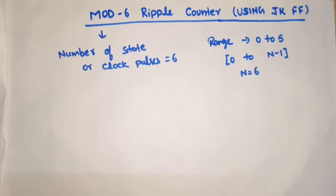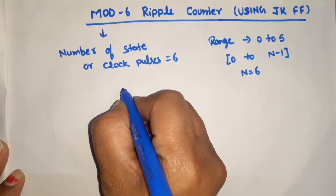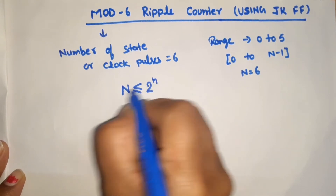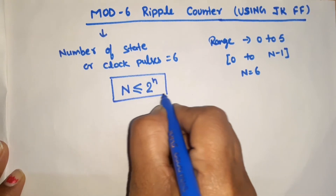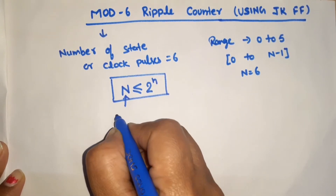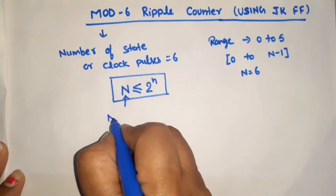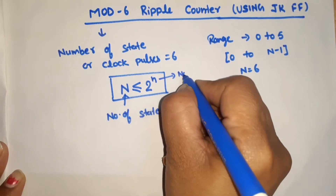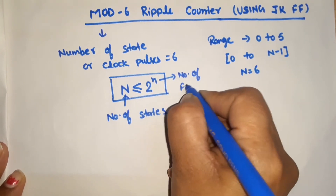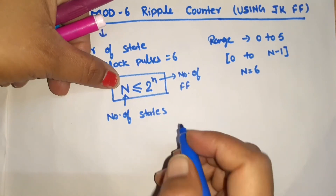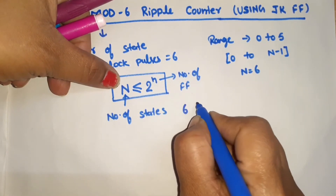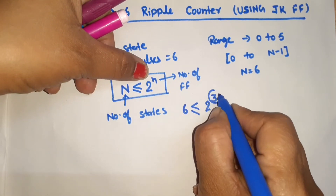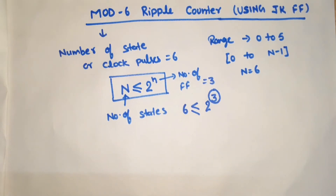Now we need to find out how many flip-flops are required. The condition that must be satisfied is: capital N should be less than or equal to 2 raised to the power n, where N is the modulus (number of states) and small n is the number of flip-flops. In this case, N is 6, so 6 ≤ 2^3, meaning the number of flip-flops required is 3.